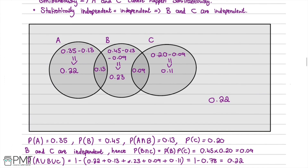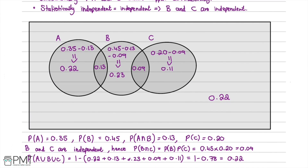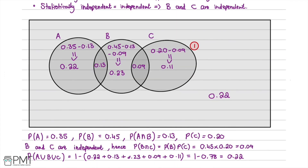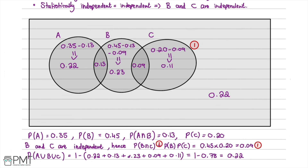This question was worth five marks. First mark for drawing the circles, second for attempting to find P(B∩C), third for successfully getting 0.09, fourth for correctly working out 0.13 and 0.09 in position, and the fifth mark for having the full Venn diagram correct.